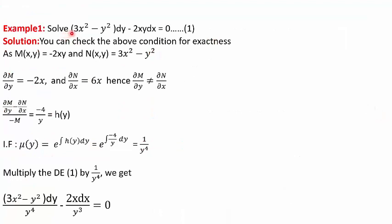In the first example, we are given the differential equation (3x² - y²)dy - 2xy dx = 0. Here M = -2xy and N = 3x² - y². First, we find the partial derivatives: del M by del y = -2x and del N by del x = 6x. They are not equal, which means the differential equation is not exact. So we find their difference, which is -8x.